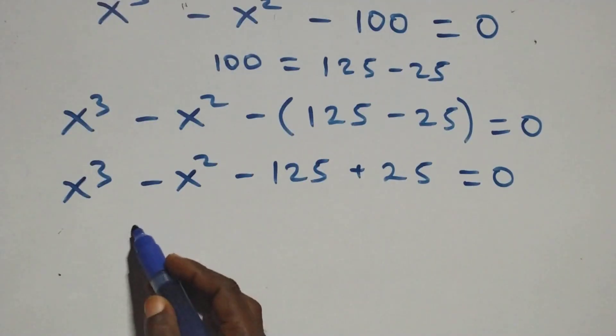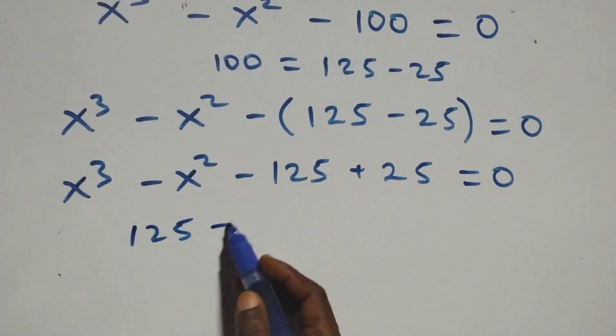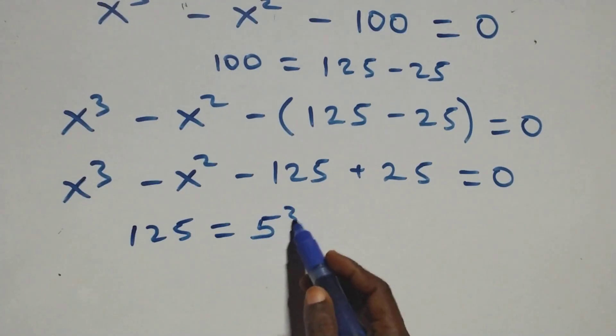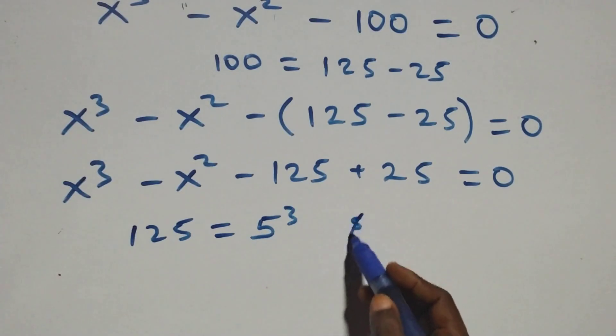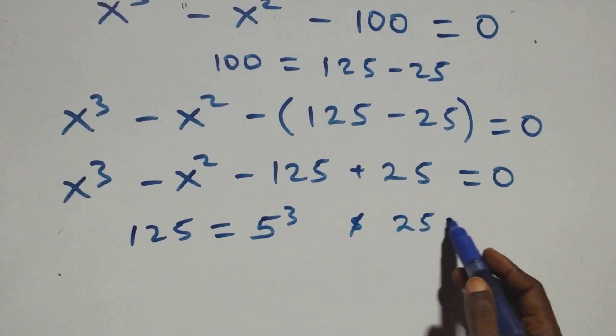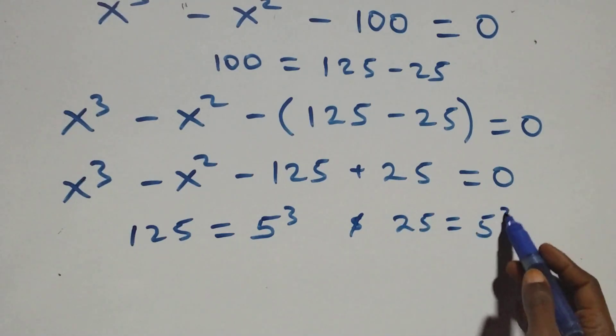Here, 125 is the same as 5 times 5 times 5, that's 5 cubed. And also 25 is the same as 5 times 5, that's 5 squared.